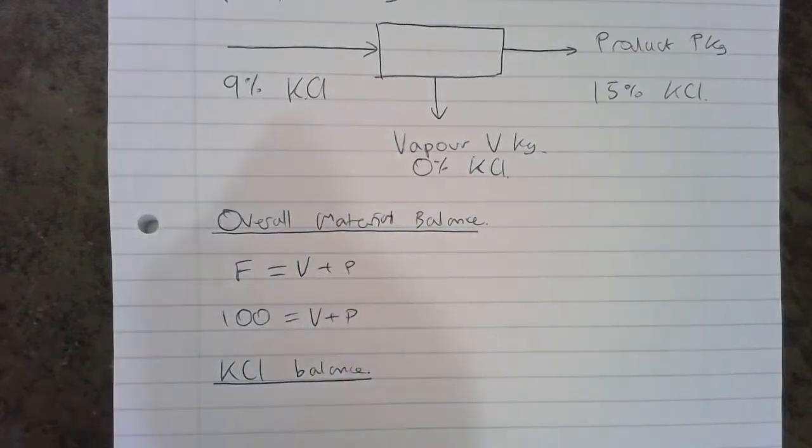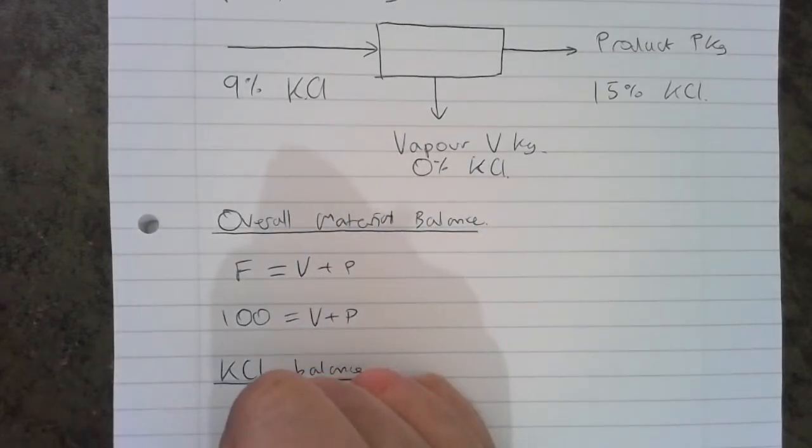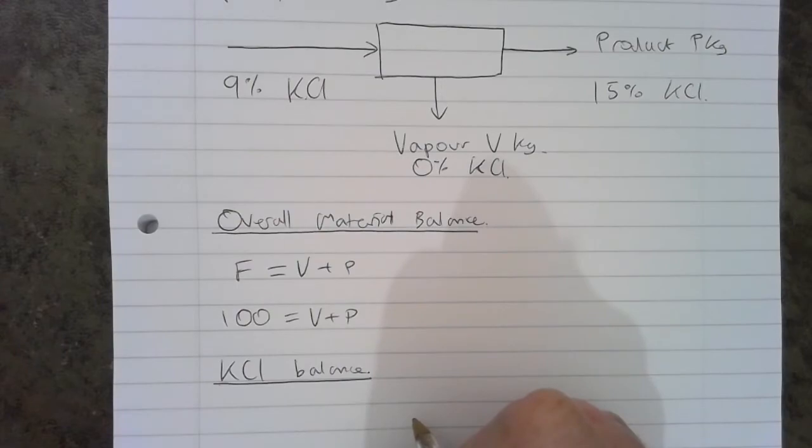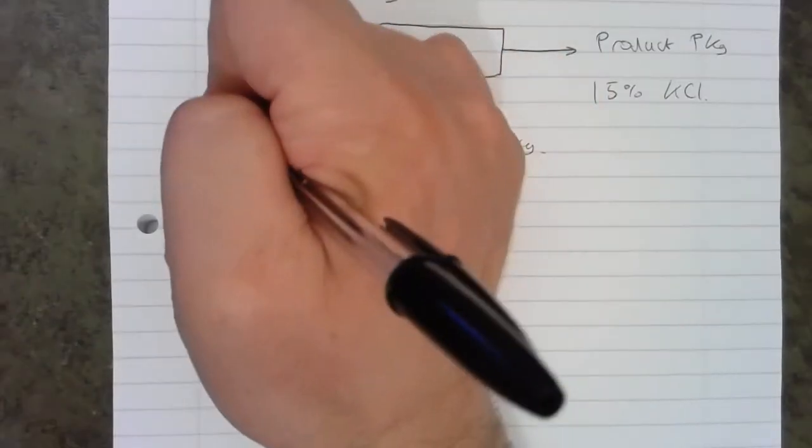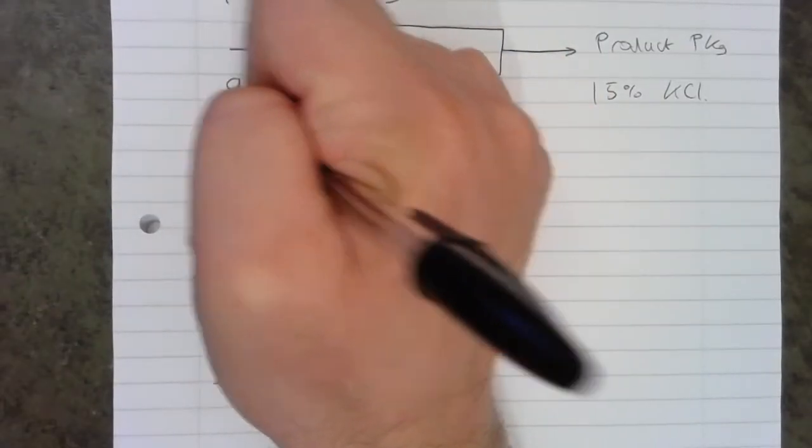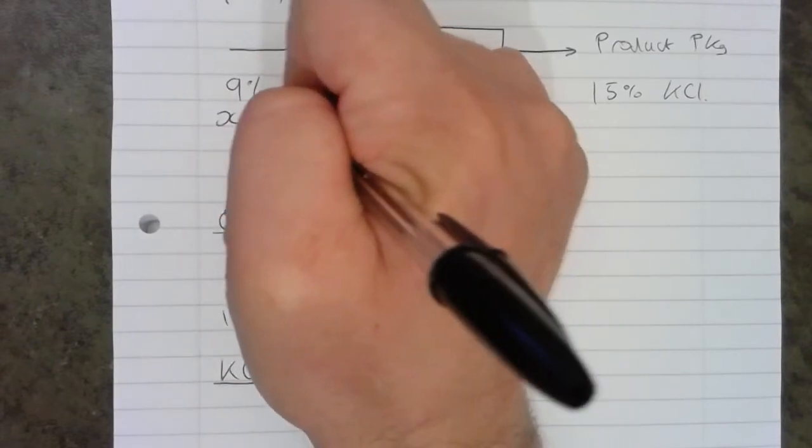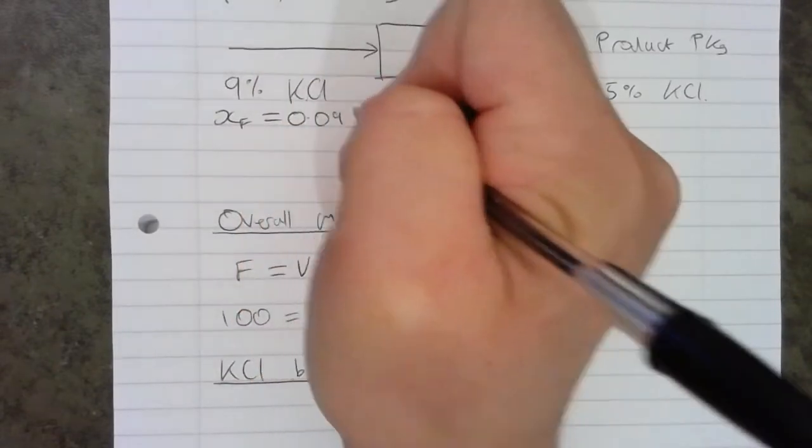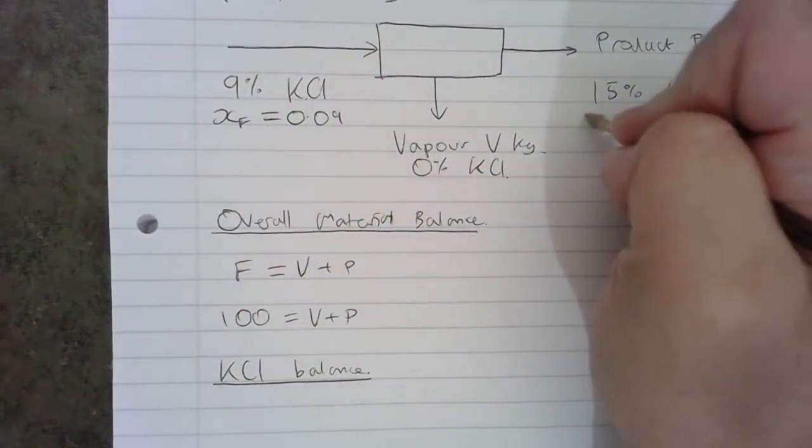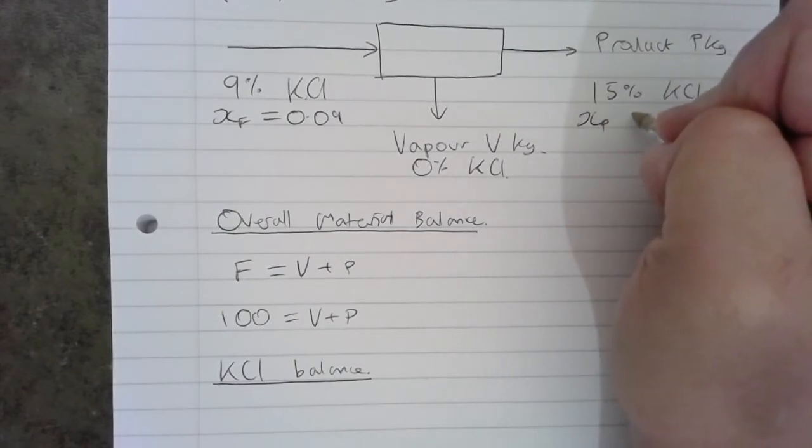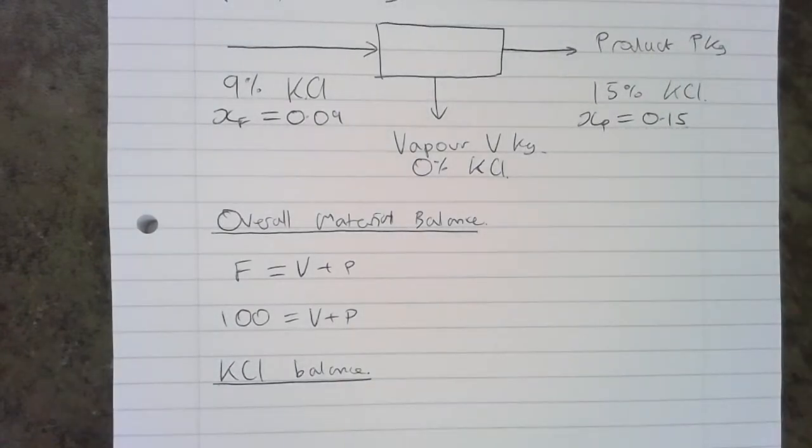And we know going in that it's 9%. So actually XF, the mass fraction of KCl going in, equals 0.09. And XP, the mass fraction of KCl going out, is 0.15. We need those to be able to do our component balance.